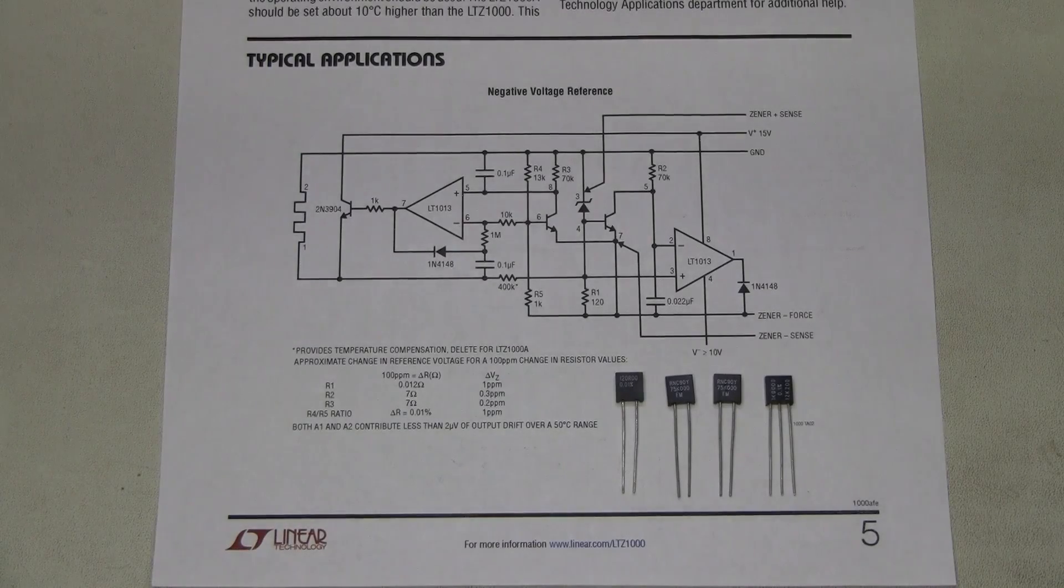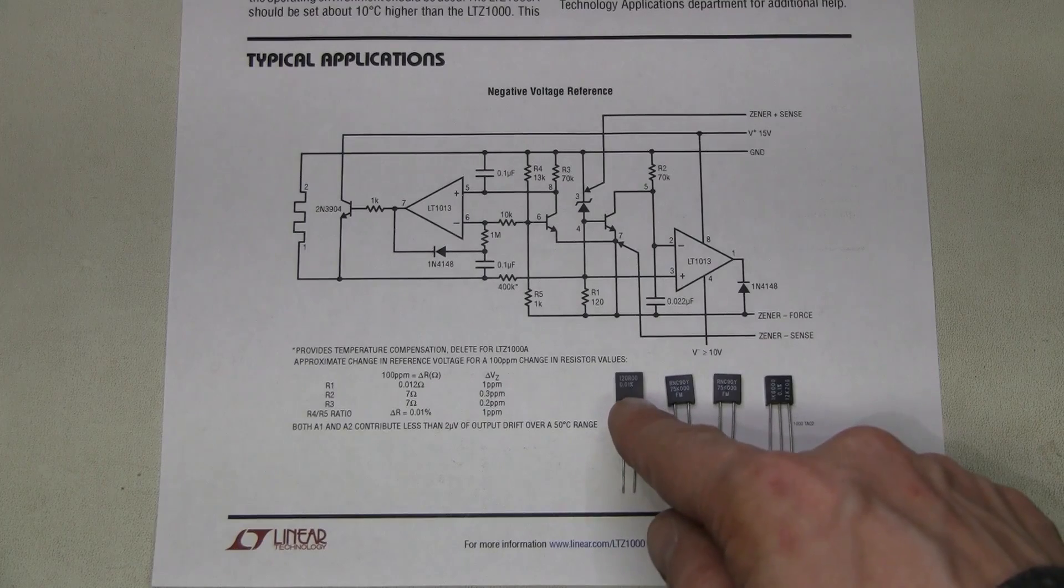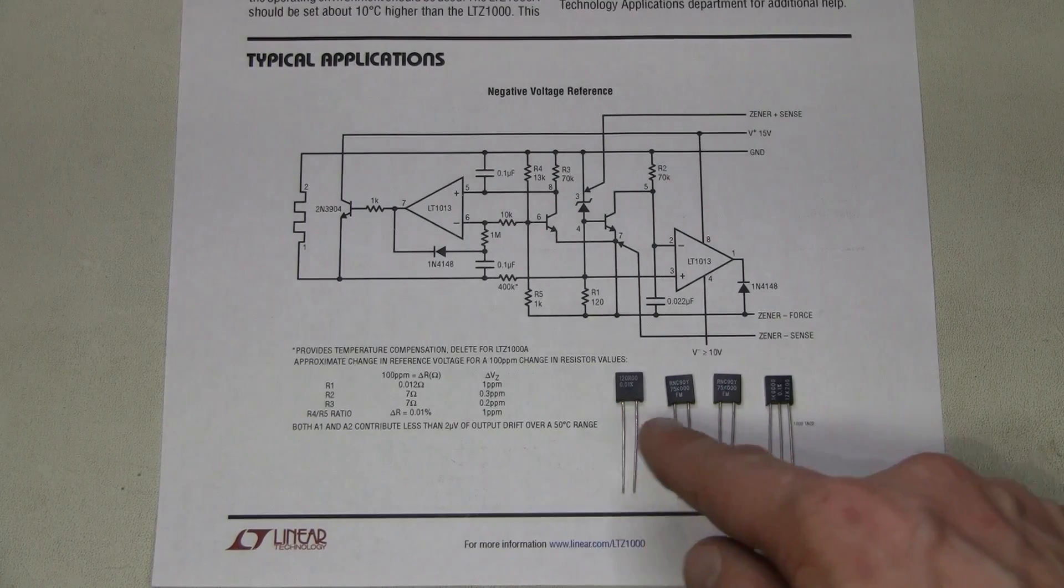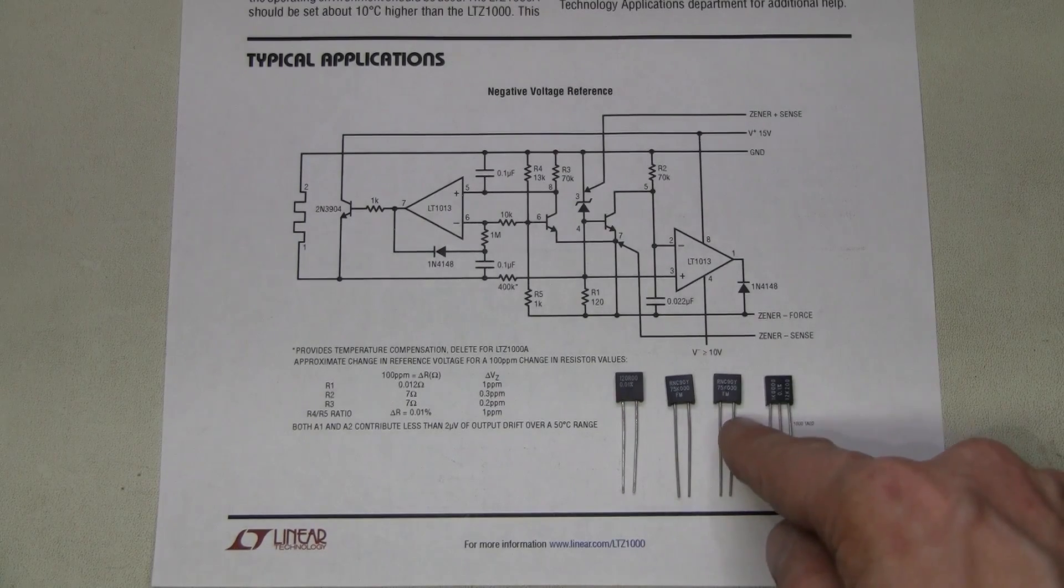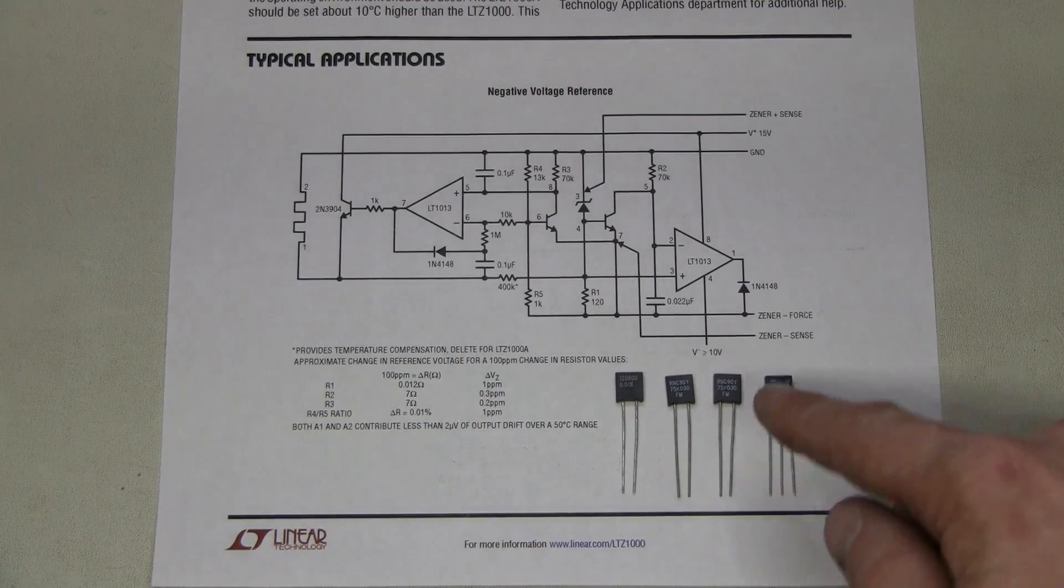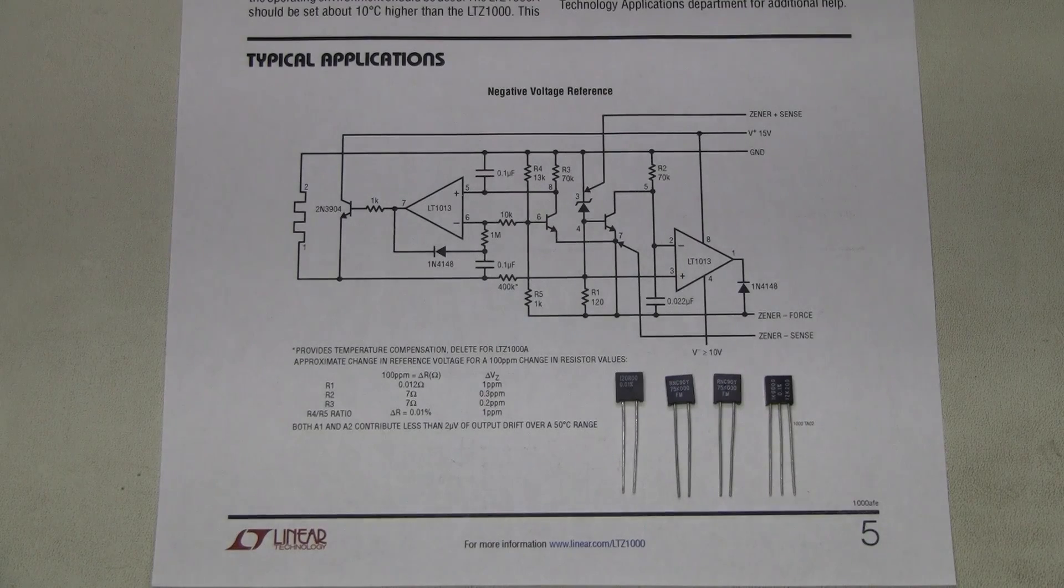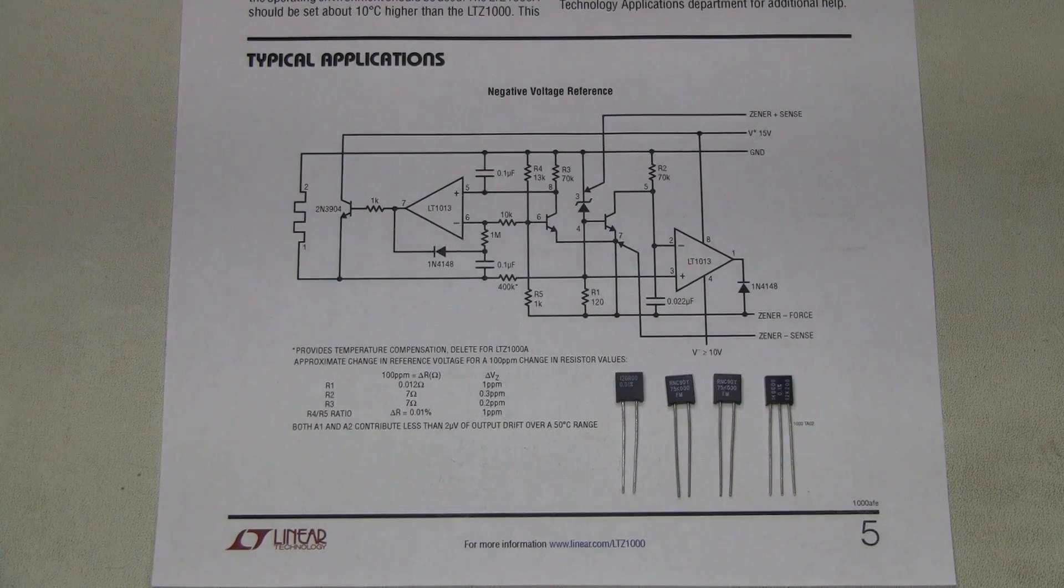Here I have my precision resistors. This is R1, a 120 ohm resistor. These are R2 and R3. I have 75k resistors, which is a bit higher than the recommended 70k. But as I understand, up to 100k is fine.